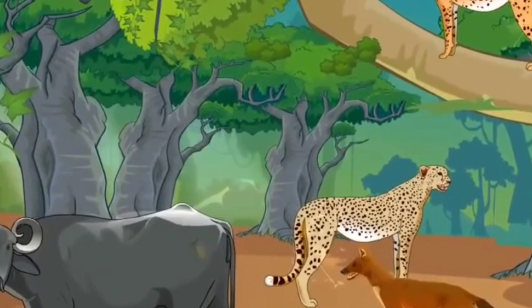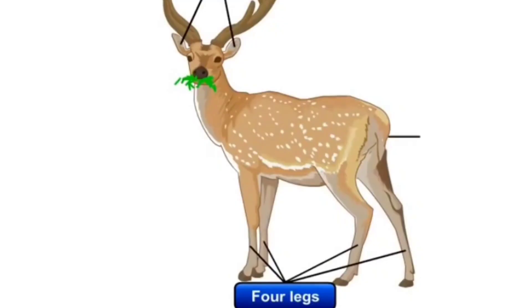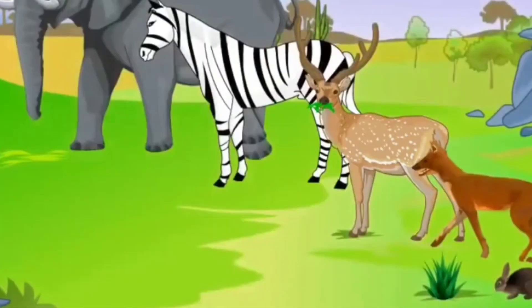The word animal includes all animals that have 4 legs, 2 ears and 1 tail. Some animals have horns. Some animals are big and huge, while some are small.